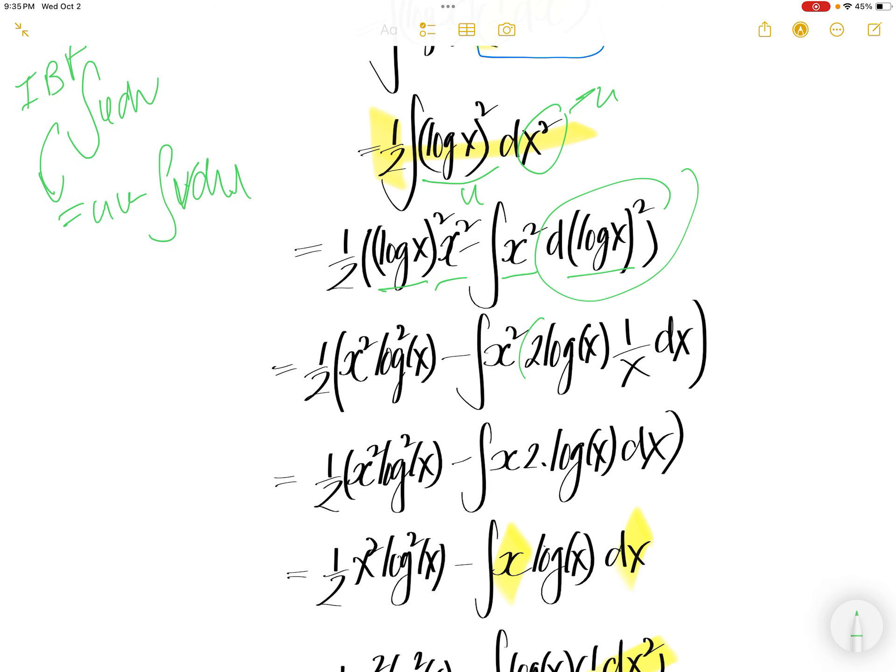The derivative of this is 2 comes down, log x, and then the derivative of log x is 1 over x dx. The x cancel, you get x, and then the 2 here, and then log x dx.